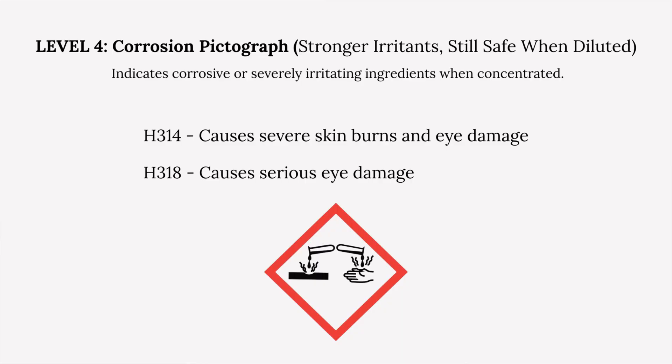Level four indicates the corrosion pictogram. The hazard codes you'll most likely see are H314 (causes severe skin burns and eye damage) and H318 (causes serious eye damage). This pictogram indicates corrosive or severely irritating ingredients when the fragrance oil is highly concentrated in its undiluted form — not necessarily when it's in a candle. But since we are makers working with these oils, make sure you protect yourself: wear gloves and have eye protection.